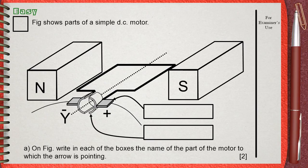The following figure shows parts of a simple DC motor. On figure, write in each of the boxes the name of the part of the motor to which the arrow is pointing.